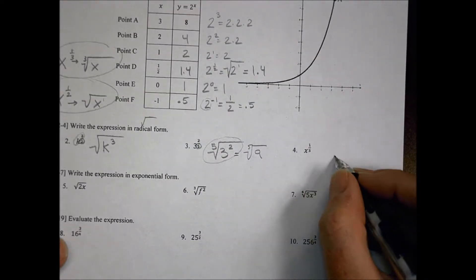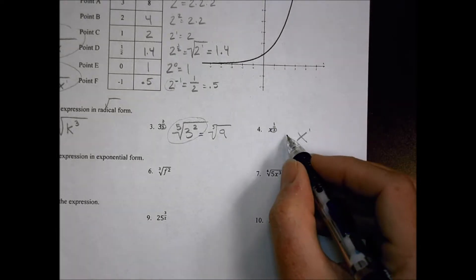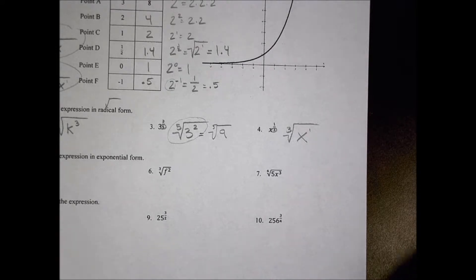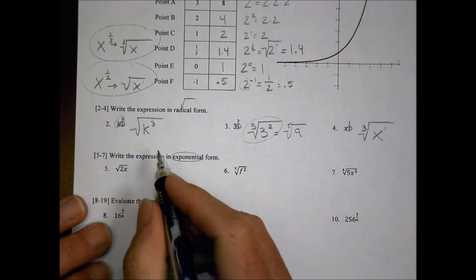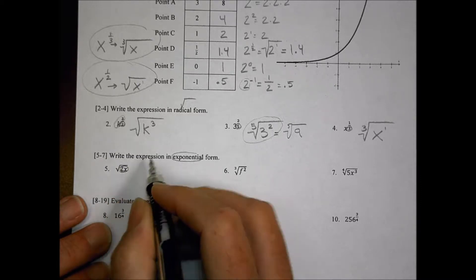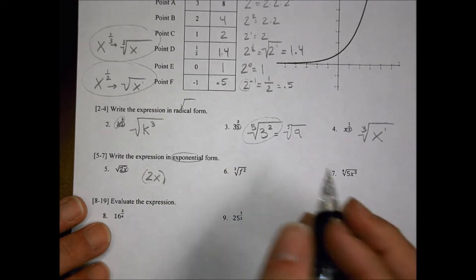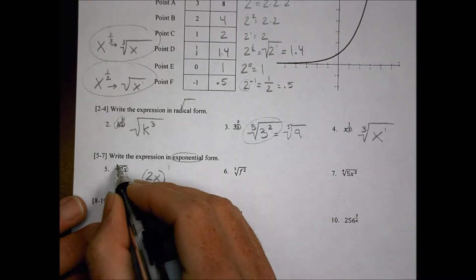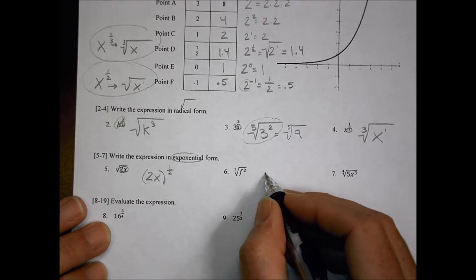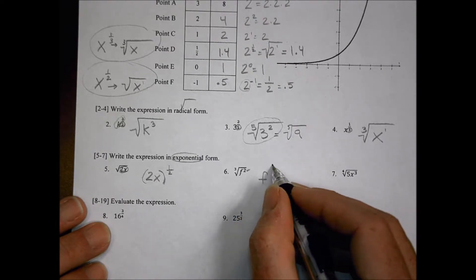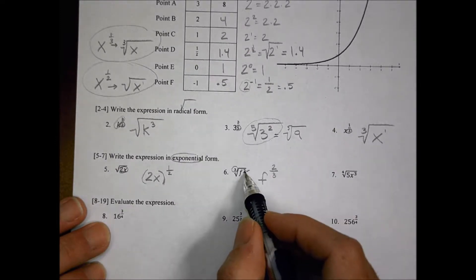For number 4, my x is still x to the 1st — I don't need to write the 1, but I can if it helps. My denominator in the exponent tells me that this is a cubed root, so I write it with a 3 in the radical. For number 5, we want to express this in exponential form, so I go the other direction. I have 2x underneath the radical, so that's 2x to the 1st in parentheses, and because it's a square root, the exponent is 1 over 2. For number 6, we see it's f squared — the squared becomes my numerator and the outside value q becomes my denominator, so this is f to the 2 thirds.